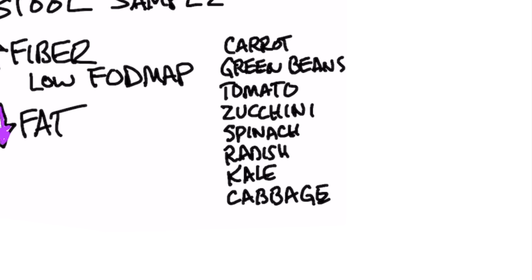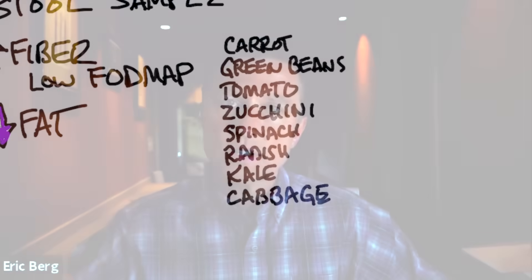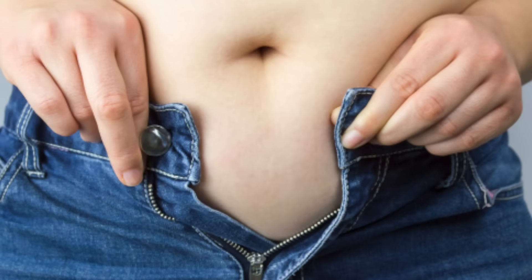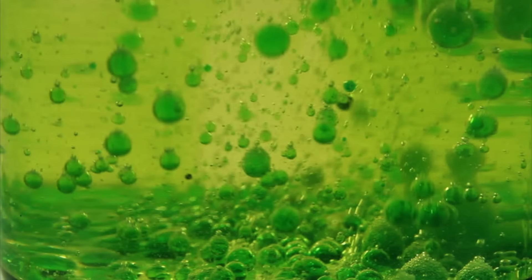I would highly recommend doing what's called low FODMAP vegetables — things like carrots, green beans, tomatoes, zucchini, spinach, radish, kale, and cabbage. Certain foods high in FODMAP, which are certain types of carbohydrates, can create more bloating and will be worse for you. You also want to cut down on fat, because fat stimulates bile production. If you have this condition it can be very devastating, but there are some things you can do about it.